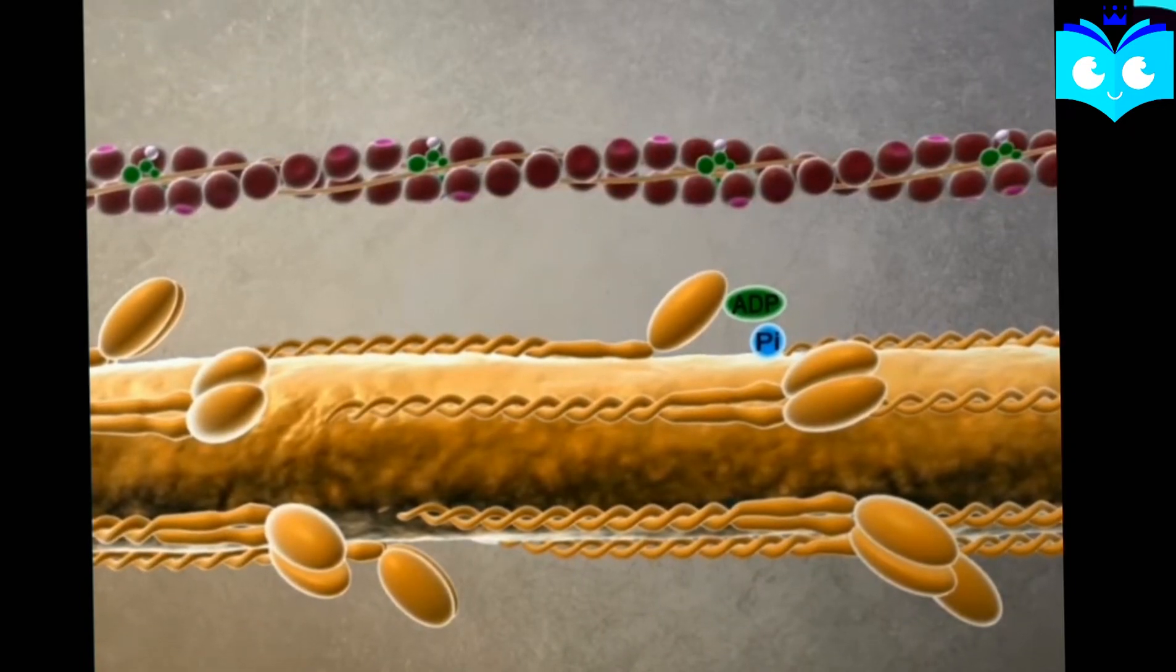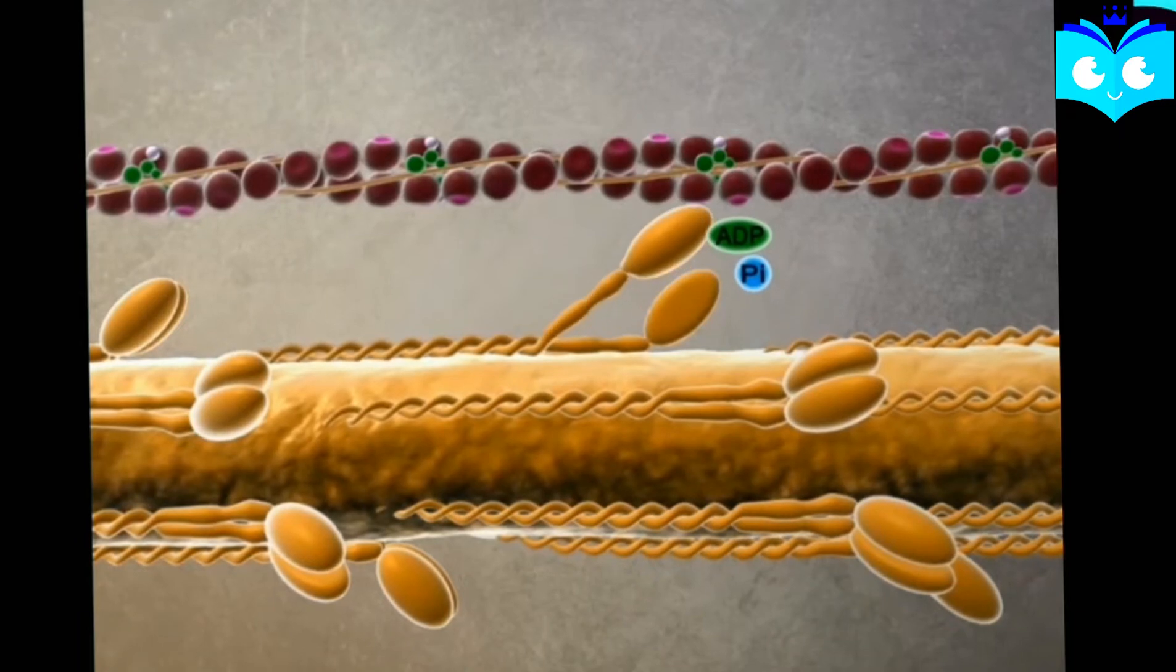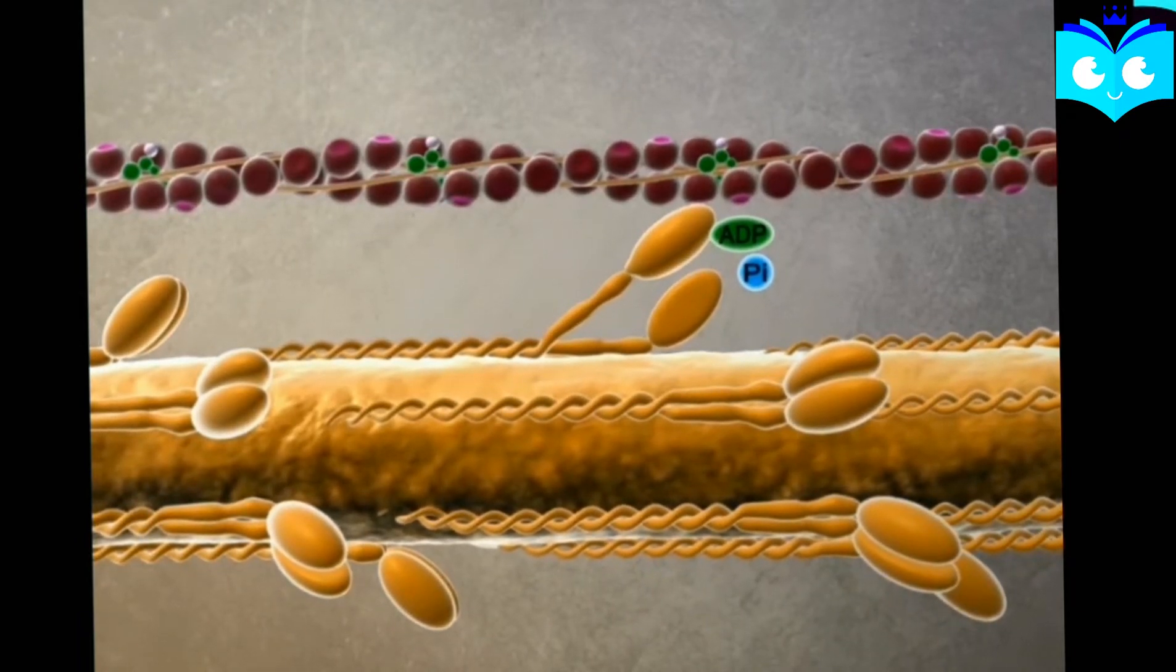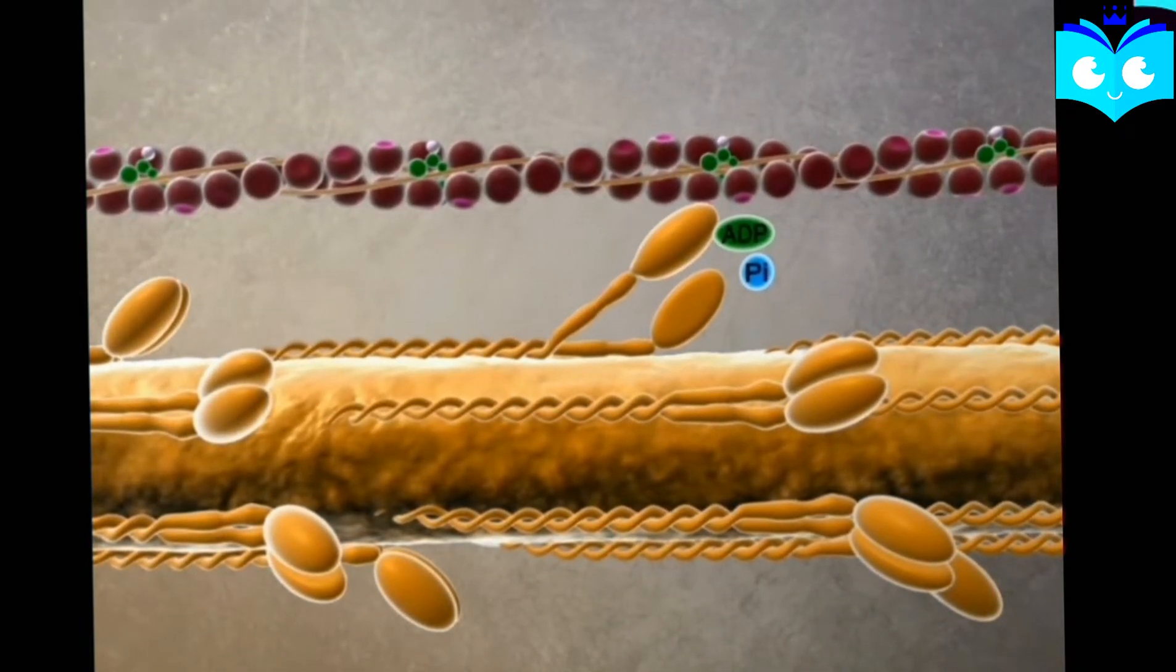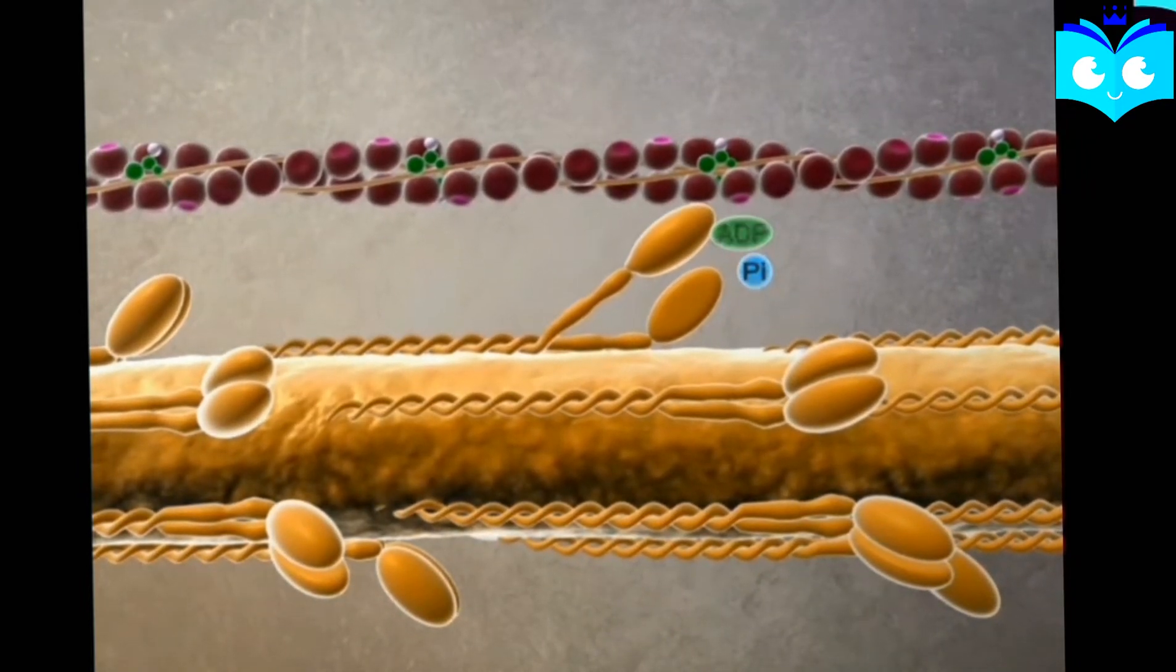One ATP molecule binds to the ATP binding site on the myosin and gives it energy. Then myosin binds to the exposed myosin binding site on the actin and leads to the formation of a crossbridge and moves it for contraction.